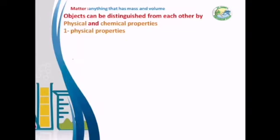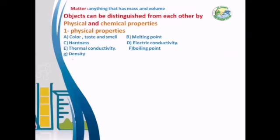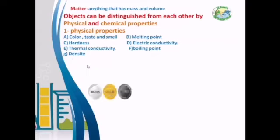Substances can be different from each other in their physical characteristics. Physical properties include color, taste, and smell, melting point, hardness, electric conductivity, thermal conductivity, boiling point, and density. We will talk about each one and how we can use each property to differentiate between different objects. We will start with color, taste, and smell.